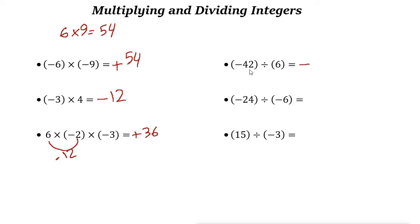For division, the same rules apply. Negative divided by positive is negative: negative 42 divided by 6 is negative 7. Negative divided by negative is positive: 24 divided by 6 is 4, so the answer is positive 4.